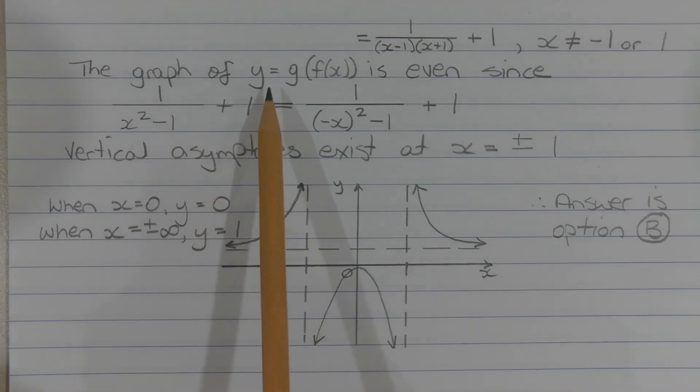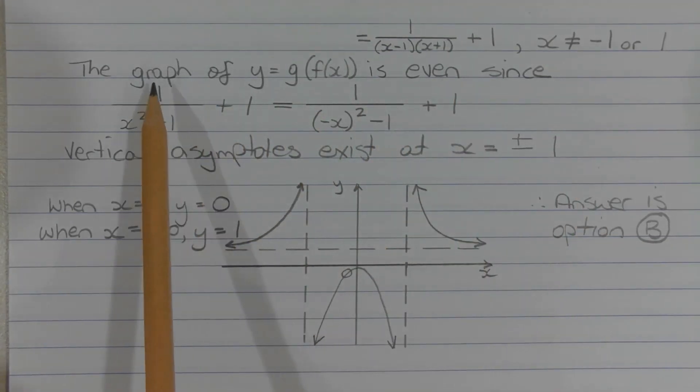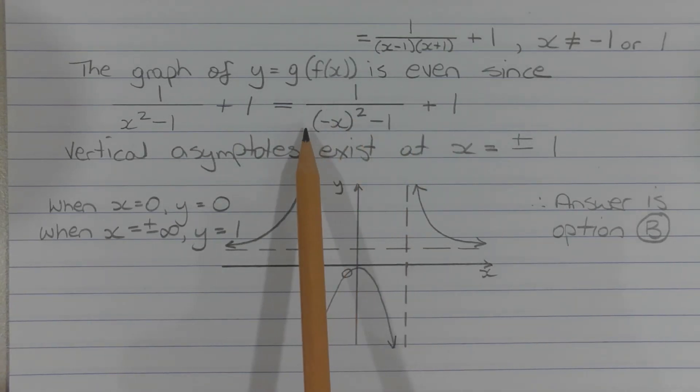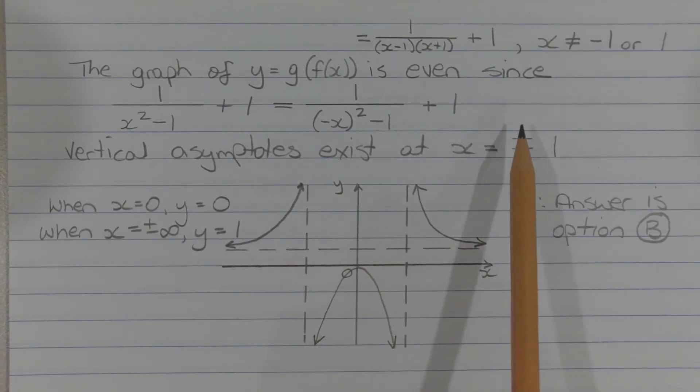The graph of y equals g of f of x is even since 1 over x squared minus 1 plus 1 is equal to 1 over (negative x) squared minus 1 plus 1. And vertical asymptotes exist at x equals plus or minus 1.